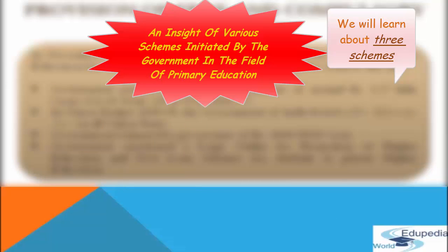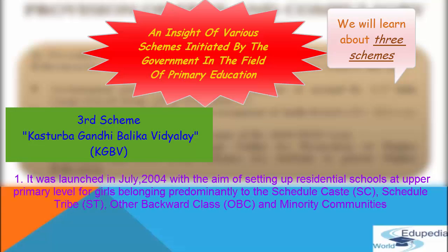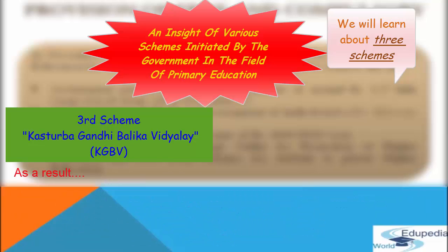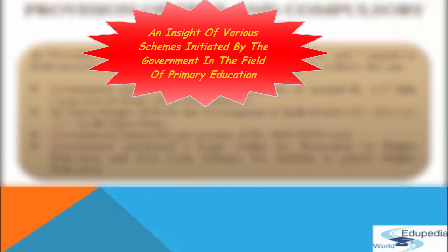The next scheme is Kasturba Gandhi Balika Vidyalaya (KGBV). The scheme was launched in July 2004 for setting up residential schools at the upper primary level for girls belonging predominantly to SC, ST, OBC, and minority communities. It ran as a separate scheme for two years but was merged with Sarva Shiksha Abhiyan from April 1, 2007. As on October 31, 2007, 1,564 KGBVs are functional and 1,09,786 girls were enrolled in them.